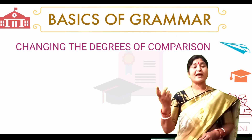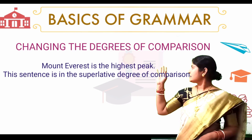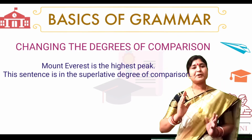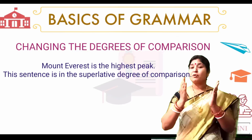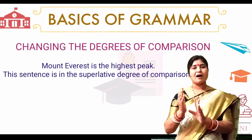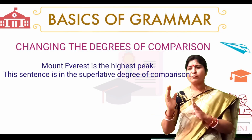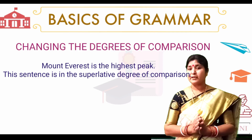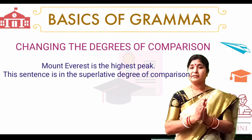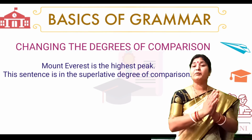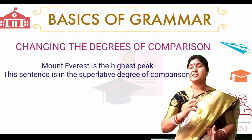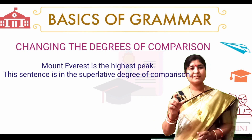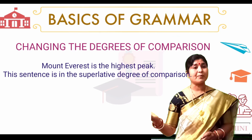For example: 'Mount Everest is the highest peak.' The forms are high, higher, and highest. Whenever we use the superlative degree, we must use the article 'the' before it. So 'Mount Everest is the highest peak' is the superlative degree.